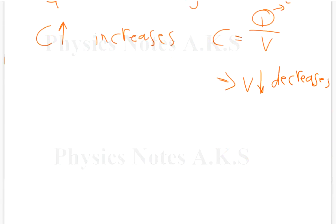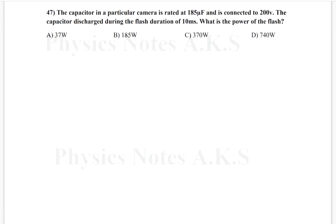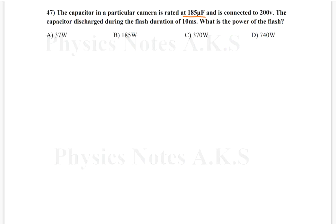Next, I have the last question in the multiple choice, which is the capacitor in a particular camera is rated at 185 microfarad and is connected to 200 volts. The capacitor discharges during the flash duration of 10 milliseconds. What is the power?